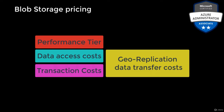Geo-replication data transfer costs: this charge only applies to accounts with geo-replication configured, including GRS and RAGRS, which is read-access-only geo-replication. Geo-replication data transfer includes a per gigabit charge. When you choose geo-replication, you are replicating your data between two geographies, and that also includes the network transfer costs.